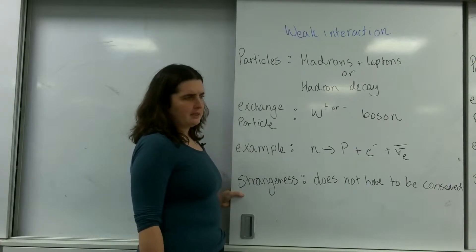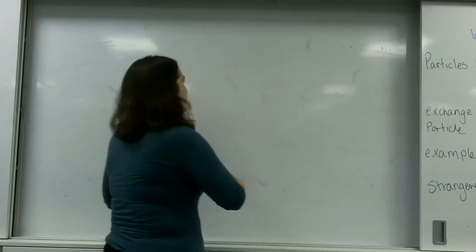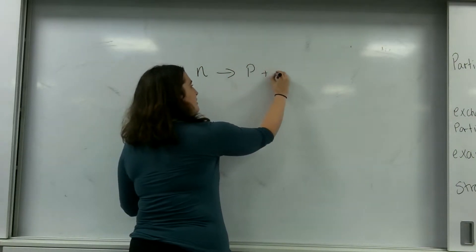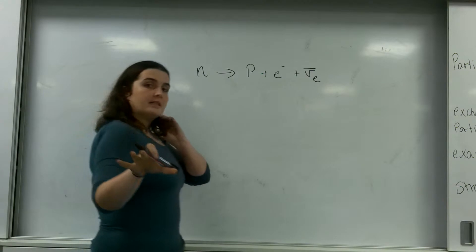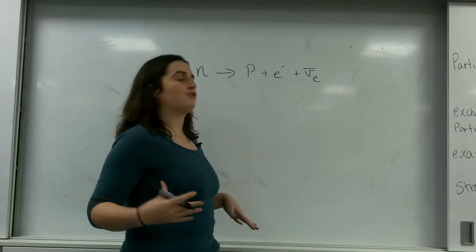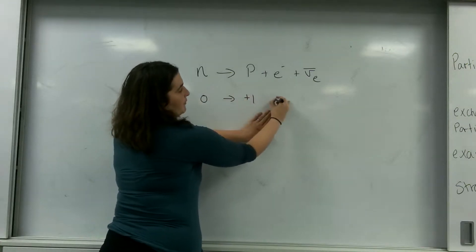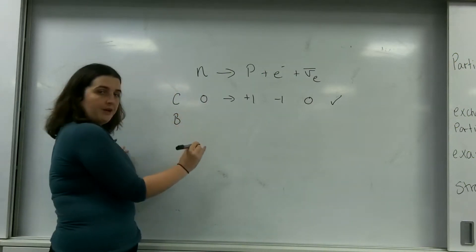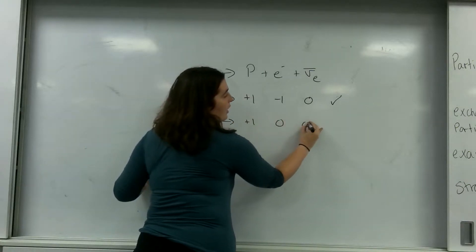Let's take beta decay as an example and make sure it works. I have a neutron going to a proton plus an electron plus an anti-electron neutrino. Remember, neutrinos come in with their flavour, so an anti-electron neutrino comes with an electron. Checking charge: I've got 0 on the left, and plus 1, minus 1, and 0 on the right — charge is conserved. For baryon number: I've got plus 1 on the left, plus 1 on the right, and the electron and neutrino are not baryons.